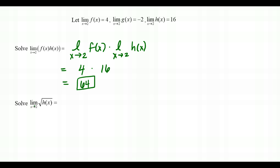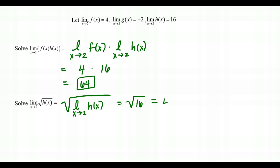In the final example, the limit as x approaches 2 of √(f(x)) — we apply the Root Law to bring the limit inside the radical, giving the square root of the limit as x approaches 2 of h(x). That value is 16, so the answer is √16 = 4.